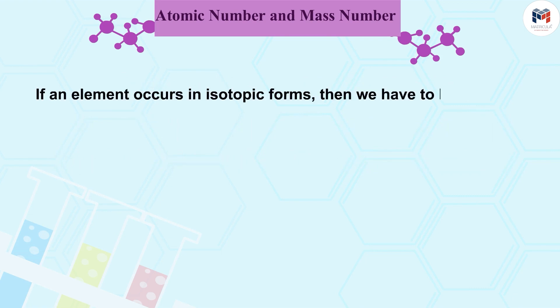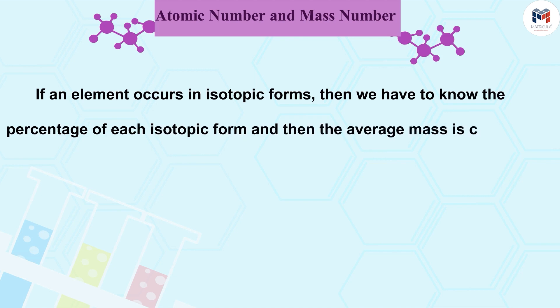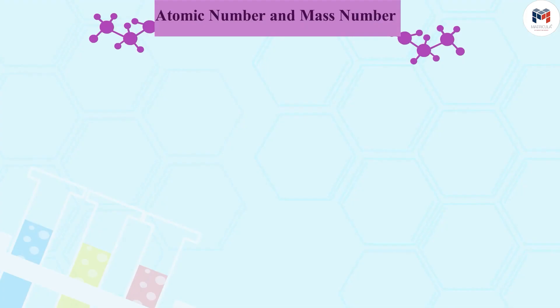If an element occurs in isotope forms, then we have to know the percentage of each isotope form and then the average mass is calculated. For example,